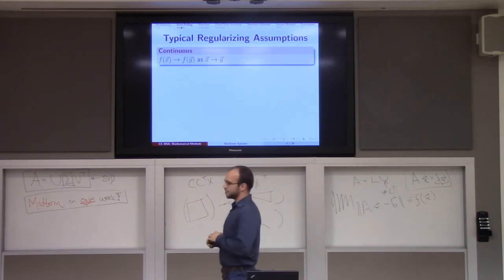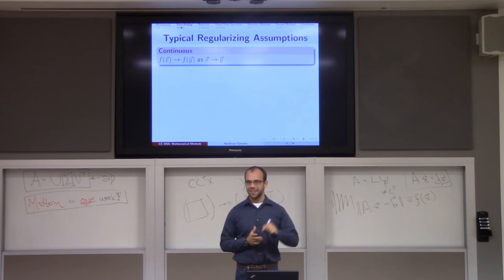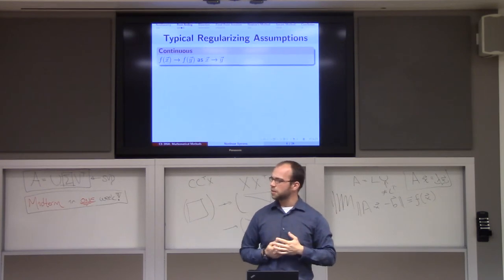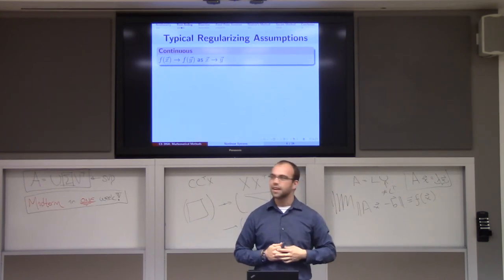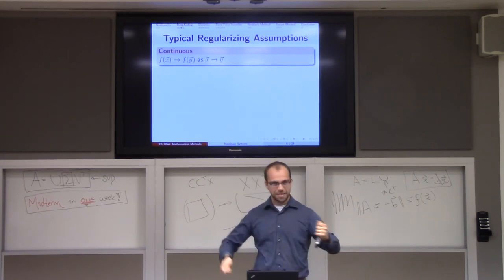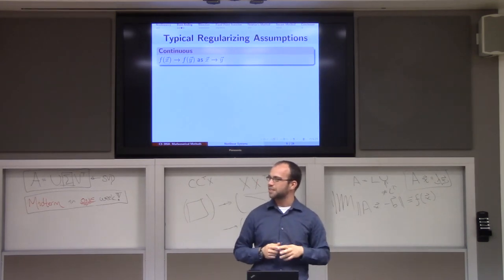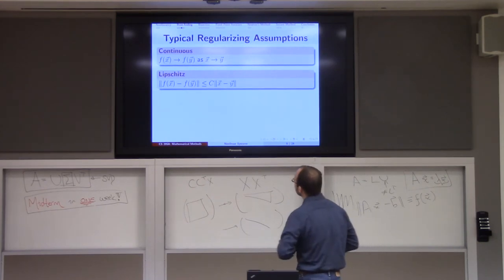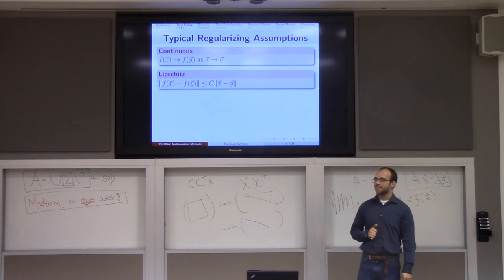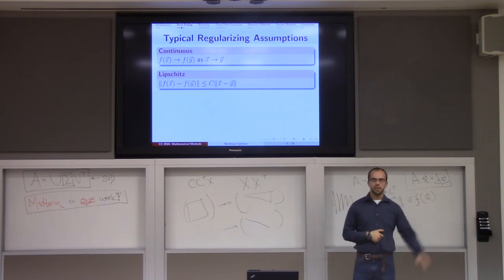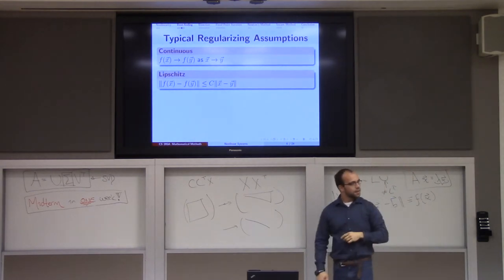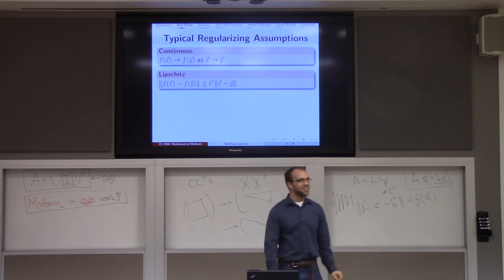Here are some typical regularizing assumptions that make the root-finding problem tractable. For one thing, you might hope that f is continuous — functions that can be drawn without lifting your pen from the page. We're going to go back and analyze why continuous functions are kind of the least thing you need to solve a root-finding problem. Making things slightly stronger, we can say our function is Lipschitz. Lipschitz sits somewhere between continuous and differentiable.